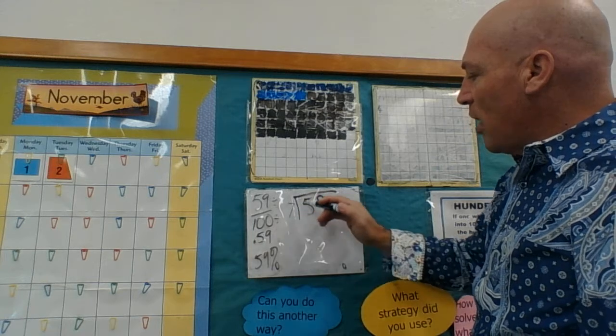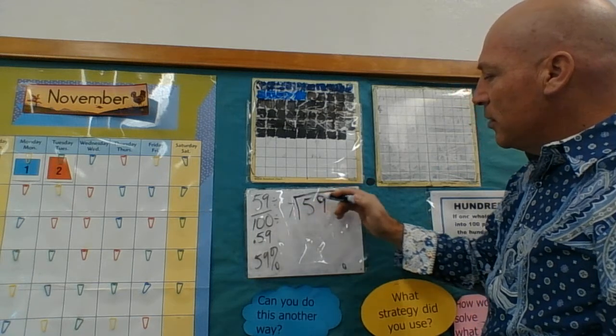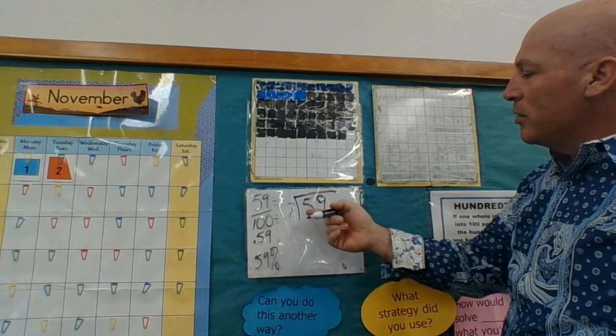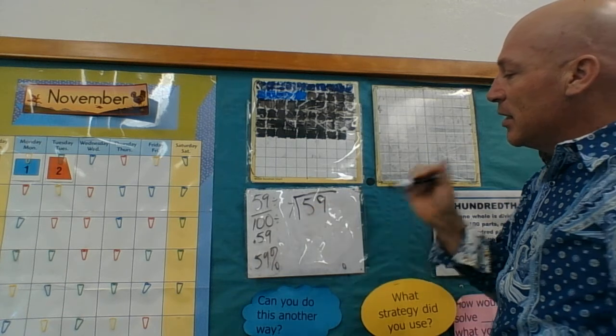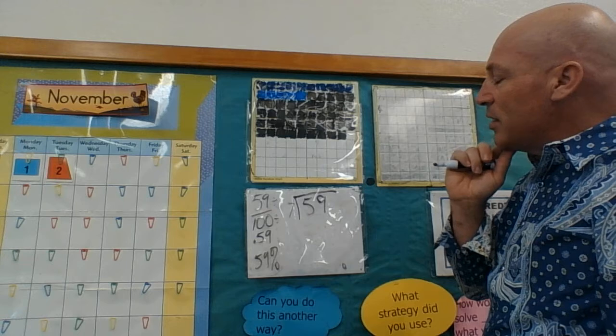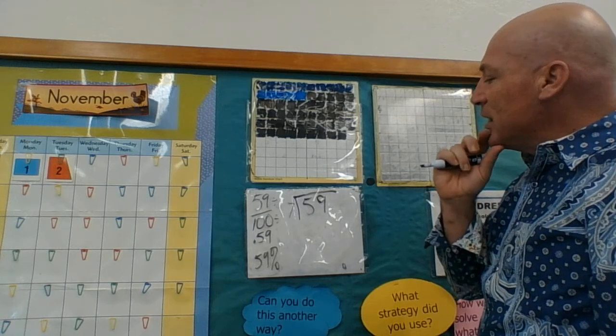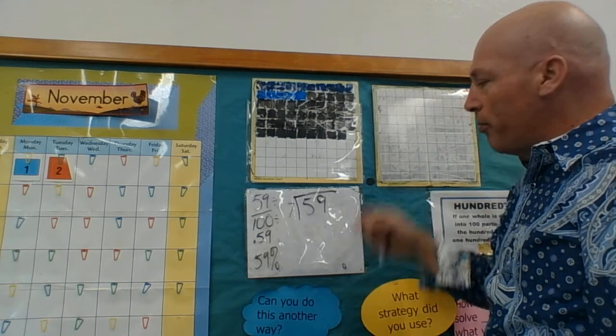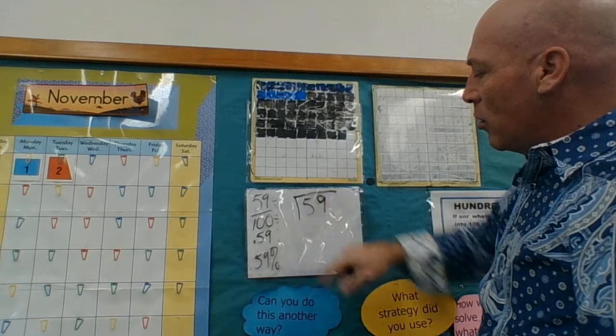Seven does not go into five. How many times does seven go into 59? Well, I know seven times seven is 49, seven times eight is 56, seven times nine is 60 - nope, seven doesn't go. What's my next prime number?